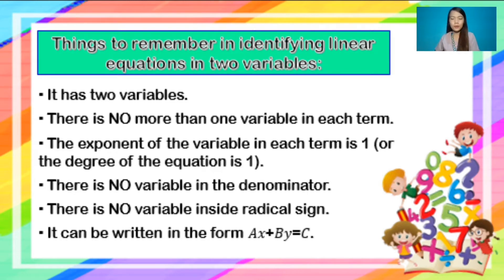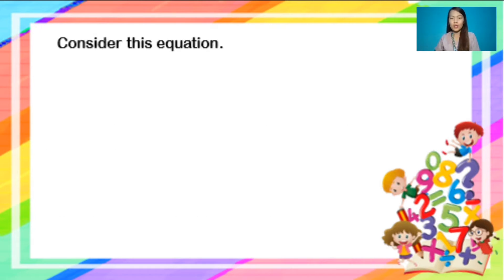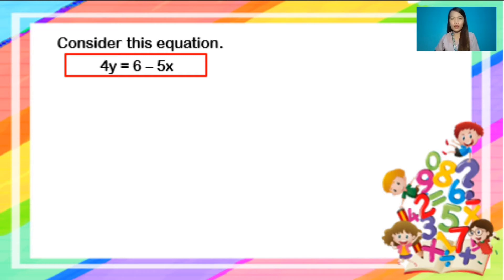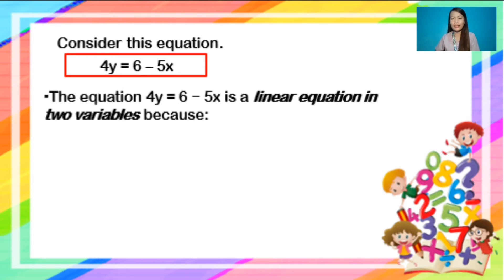And lastly, it can be written in the form ax plus by equals c. Consider this equation: 4y equals 6 minus 5x. Do you think this equation is a linear equation in two variables? Yes, the equation 4y equals 6 minus 5x is a linear equation in two variables.